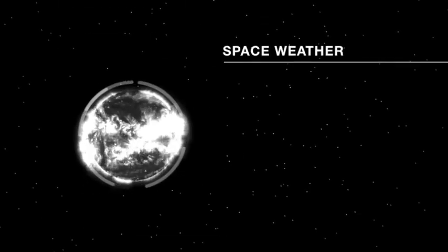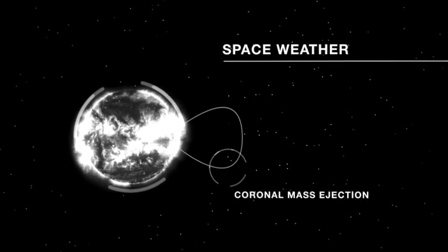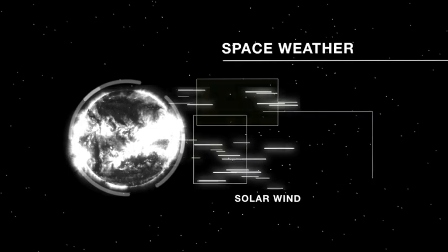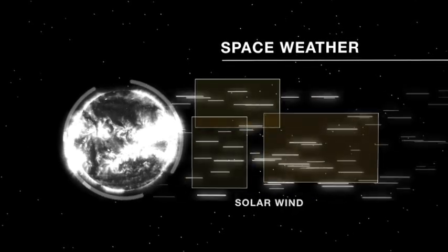The Sun puts out what we call space weather. Space weather causes problems with our satellites, our astronauts, our communication systems here on Earth, and our navigation systems.